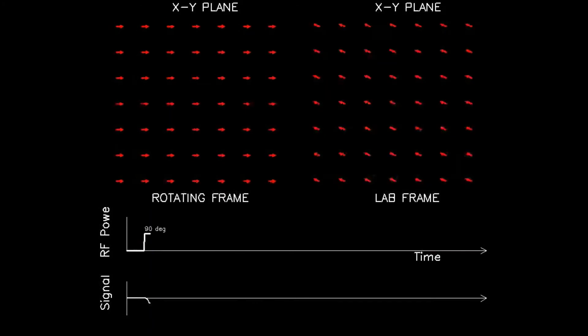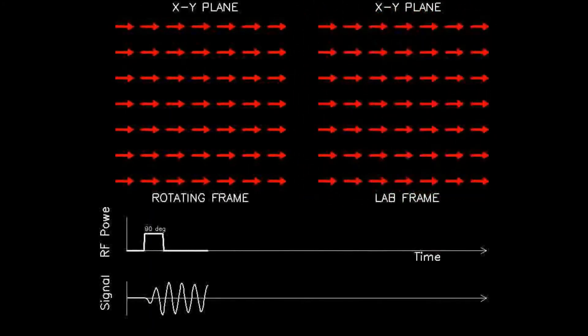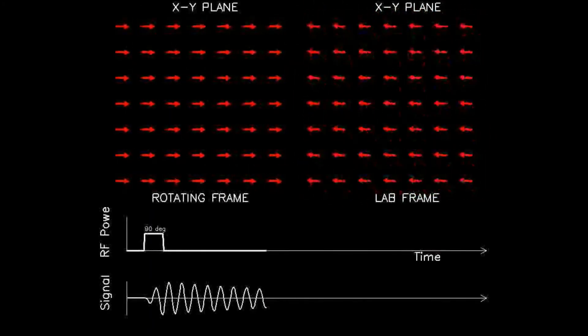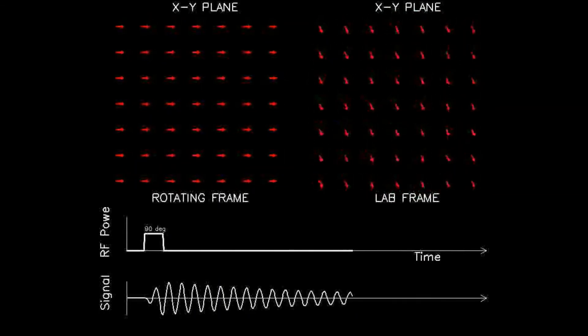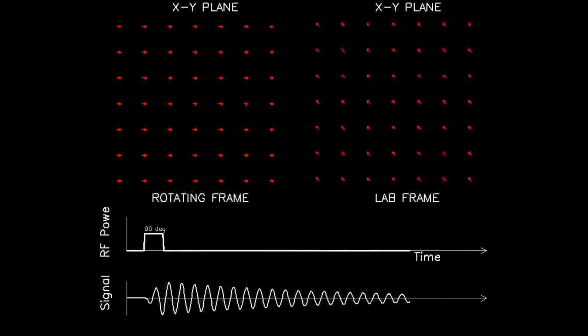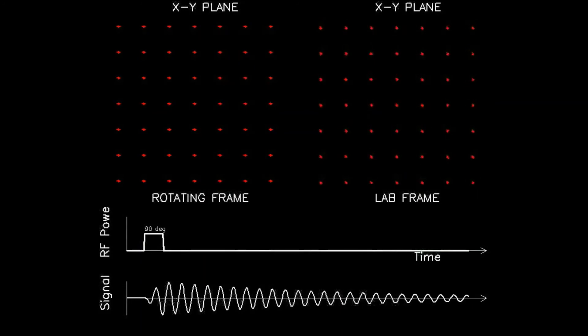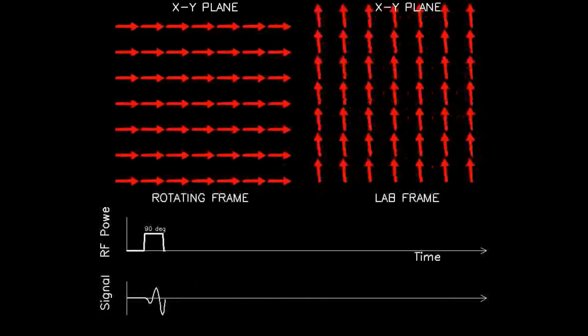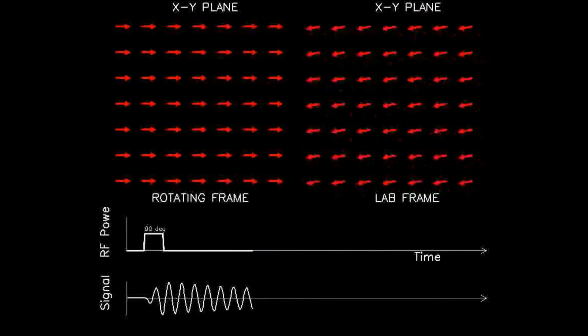Now observe the bottom timeline. Since the signal is proportional to the length of the transverse component, the signal experiences an exponential decay superimposed on the sinusoidal waveform. The time for this decay to reach 37% of its maximal value is defined as the T1 time.